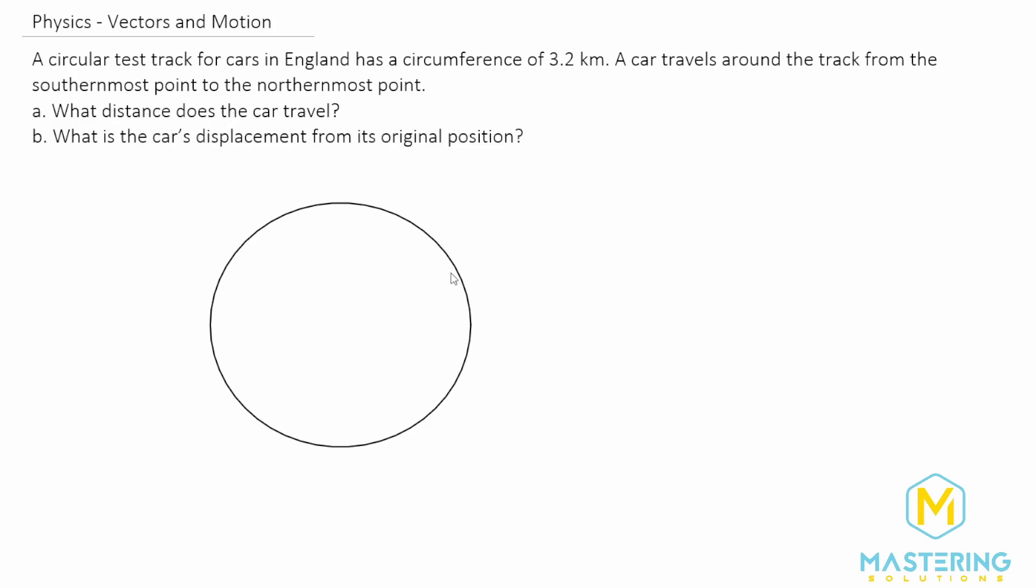They tell us at the beginning of the problem that the circumference of this circle is all the way around. So that whole distance there, C, is equal to 3.2 kilometers.